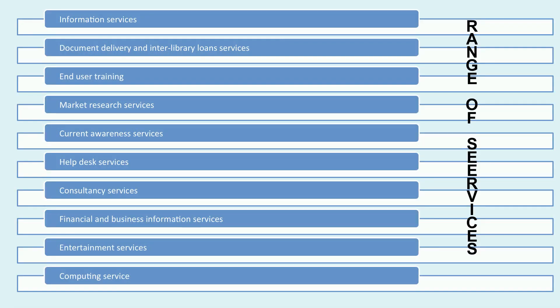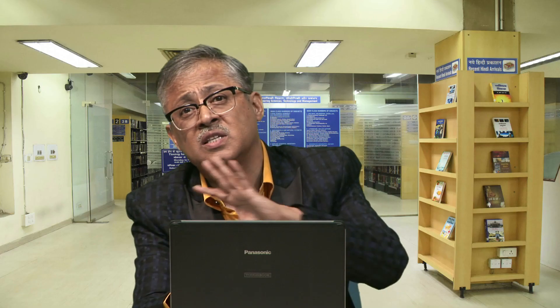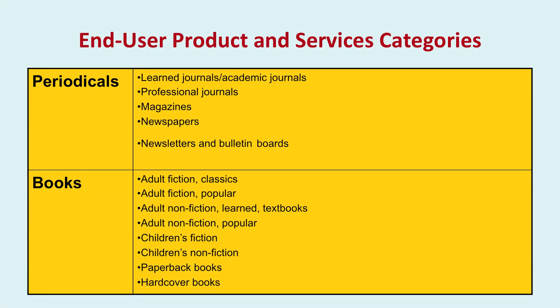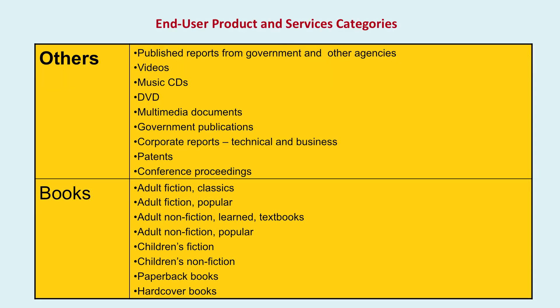Services that can be marketed include: information services, document delivery, interlibrary loan, end-user training, market research services, current awareness services, help desk services, consultancy services, financial and business information services, entertainment services, and computing services. There are also end-user products such as periodicals, books, published reports, musical series, and DVDs across various categories.